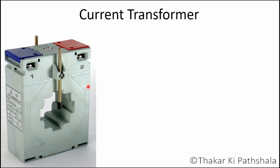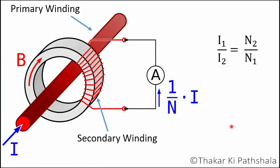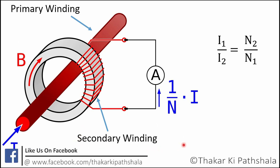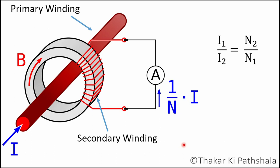The working principle of a current transformer is the same as all other transformers. From the voltage point of view, a current transformer is a step-up transformer — as per the transformer equation, if voltage is stepped up, then current is stepped down. From the current point of view, this is a step-down transformer. The relevant equation is: I1 / I2 = N2 / N1, where I1 and I2 are primary and secondary currents, and N2 and N1 are the number of turns for the secondary and primary windings respectively. In a current transformer, the number of secondary turns is very high compared to the primary, so secondary current will be lower than primary current.